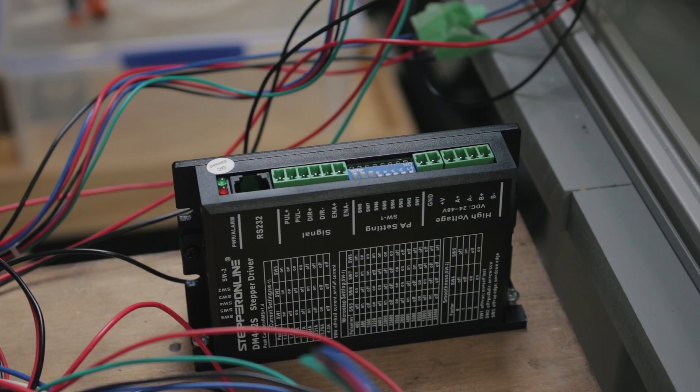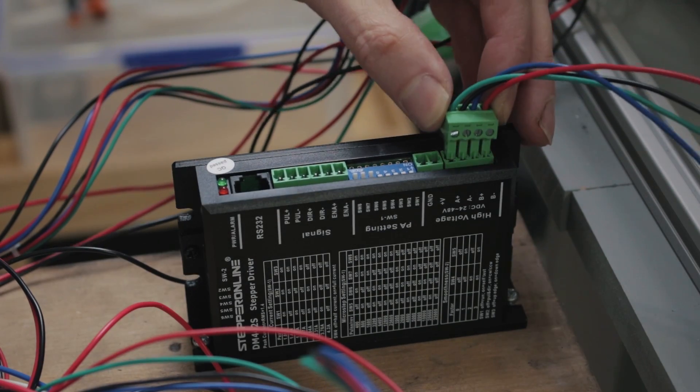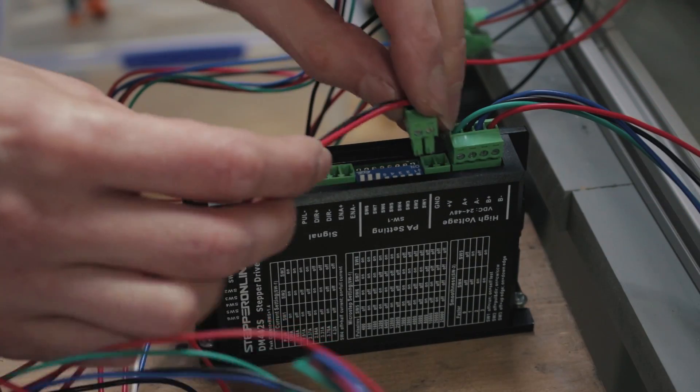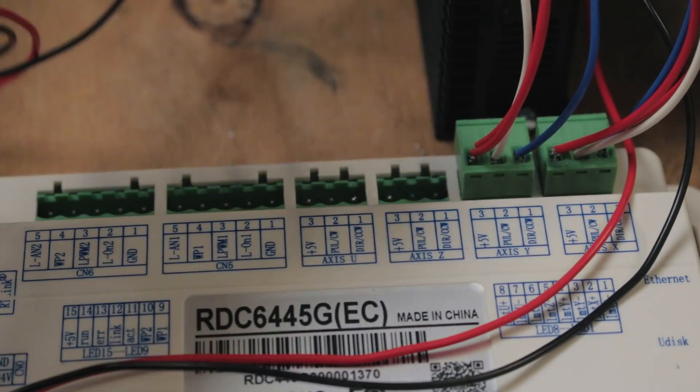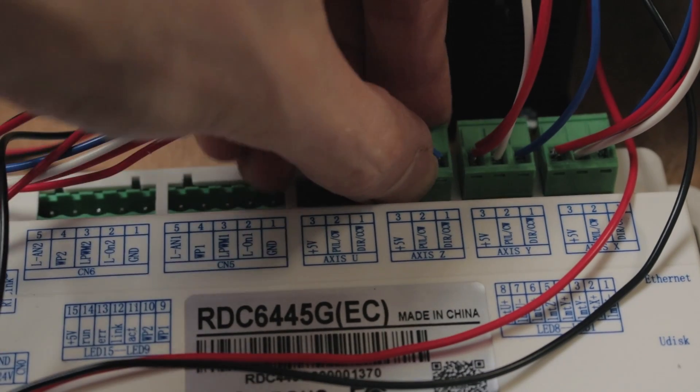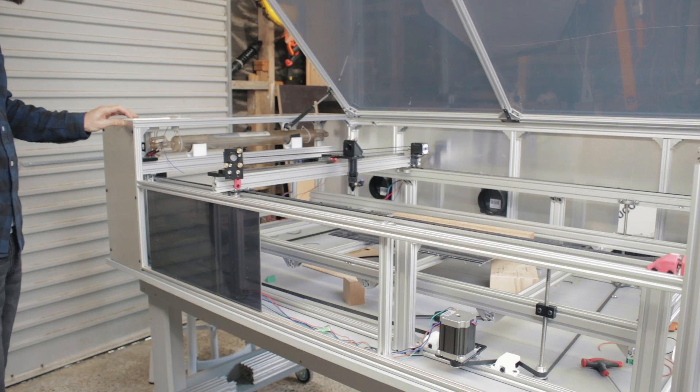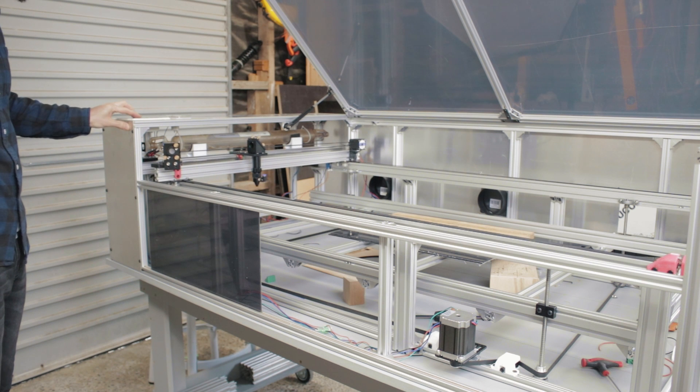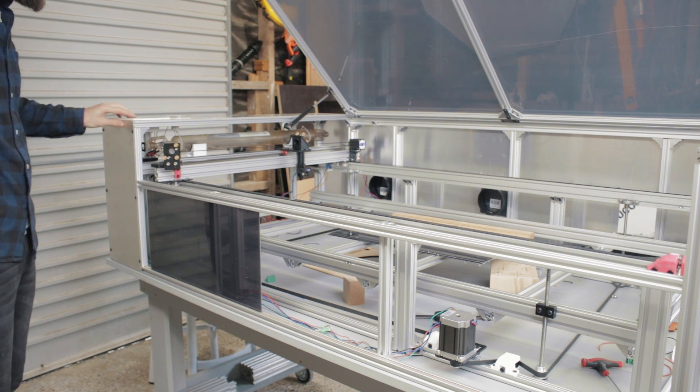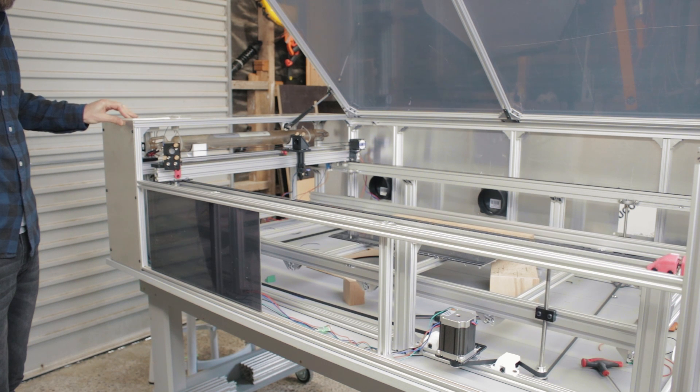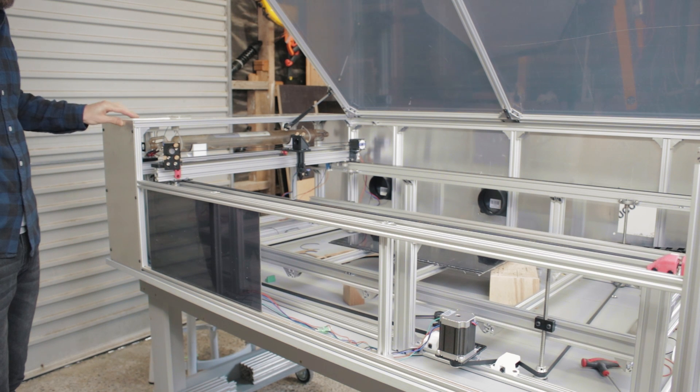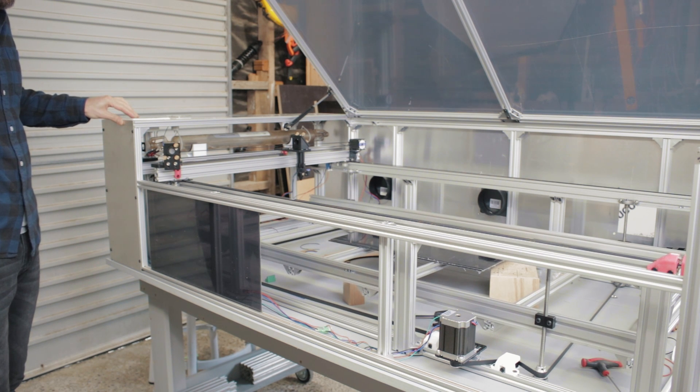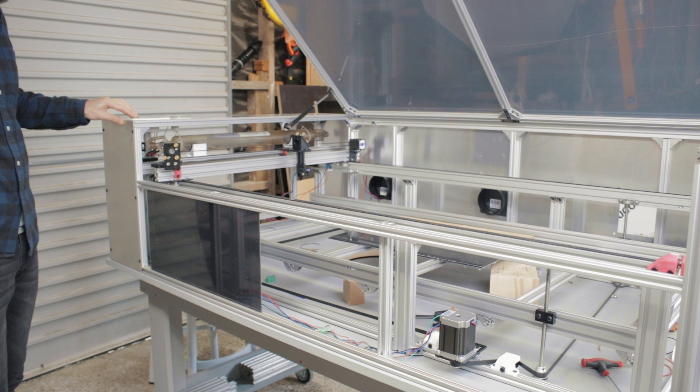Now to wire it up I've got myself another stepper driver and I'll plug the wires from the stepper motor in, the 24 volts from the power supply and then the signal from the driver to the z-axis output on the control board. Yeah I mean it's not gonna win any races but I'm happy with that.